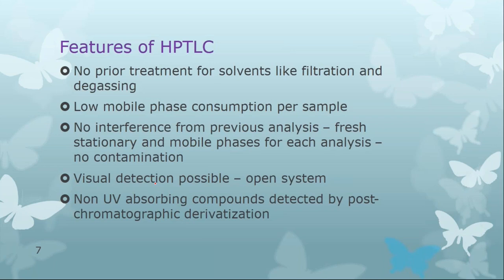Visual detection is possible since HPTLC is an open system, unlike HPLC which is a closed column system. Non-UV absorbing compounds can be detected by post-chromatographic derivatization — you can expose the plate to various reagents after separation, making compounds UV absorbing so they can then be detected.